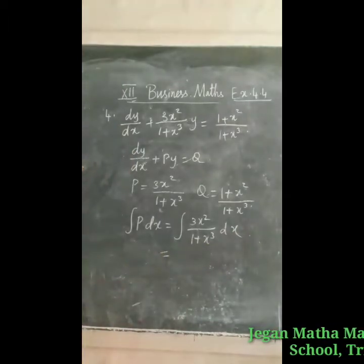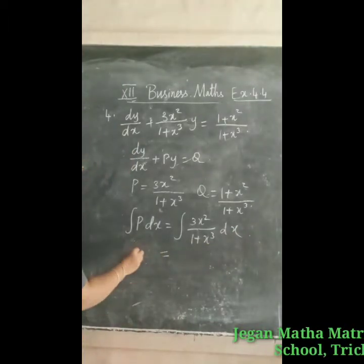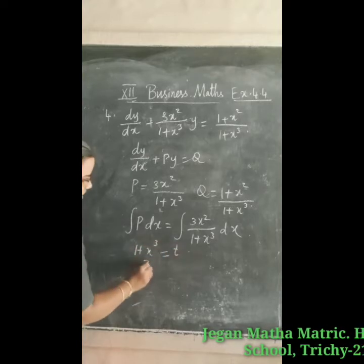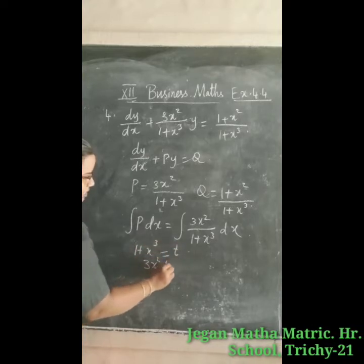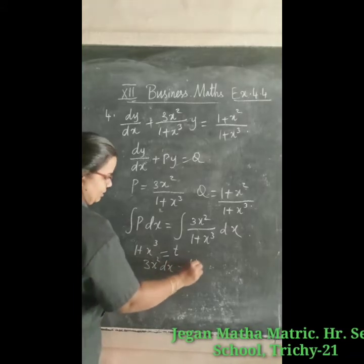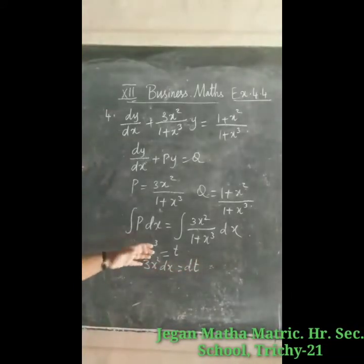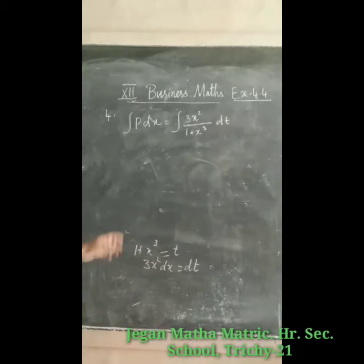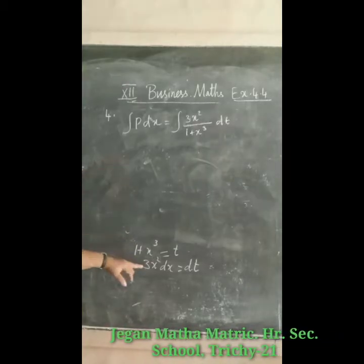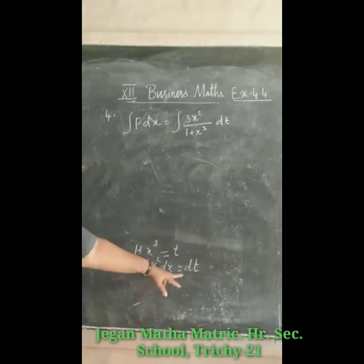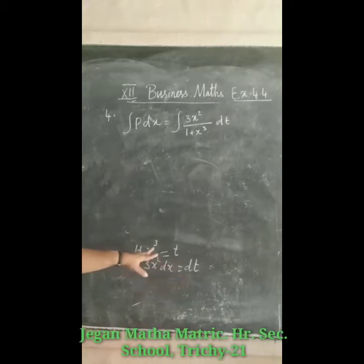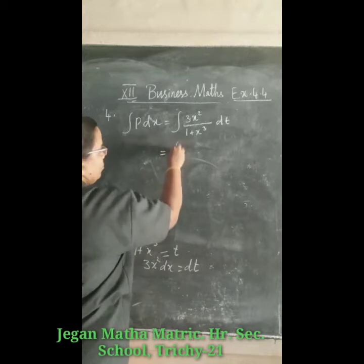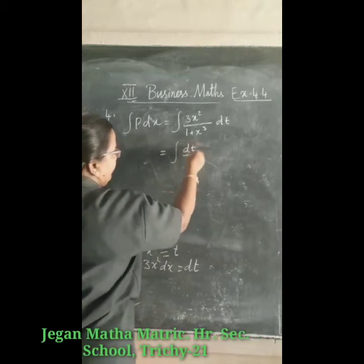Let us consider 1 + x³ = t. So 3x² dx = dt. We substitute in this equation: instead of 3x² dx we write dt, and instead of (1 + x³) we write t. So that gives us the integral of dt divided by t.